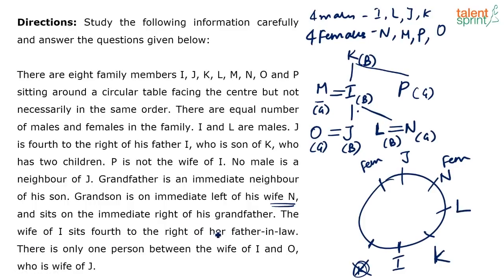The wife of I, who is M, sits 4th to the right of her father-in-law K. Counting 1, 2, 3, 4 from K, we place M. Now there is only one person between M and O — the wife of J. That one person must be P. So the complete arrangement is fixed with all 8 members placed.